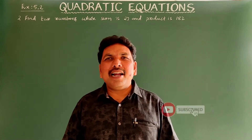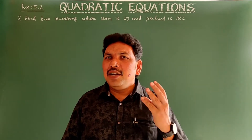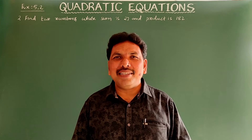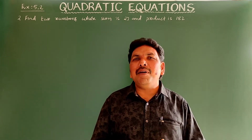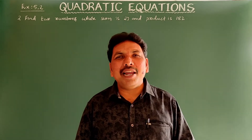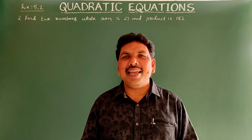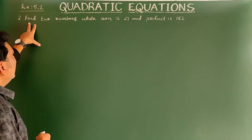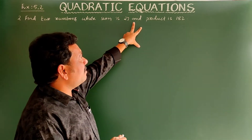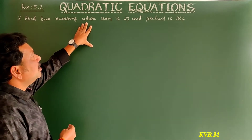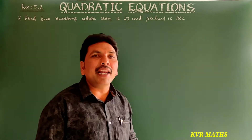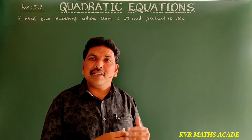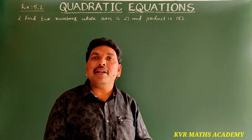Hi friends, welcome to KVR Math Academy. In this video, let's discuss problems 2, 3, and 4 in Exercise 5.2 on quadratic equations of 10th class mathematics. We have to find two positive numbers whose sum is 27 and product is 182.